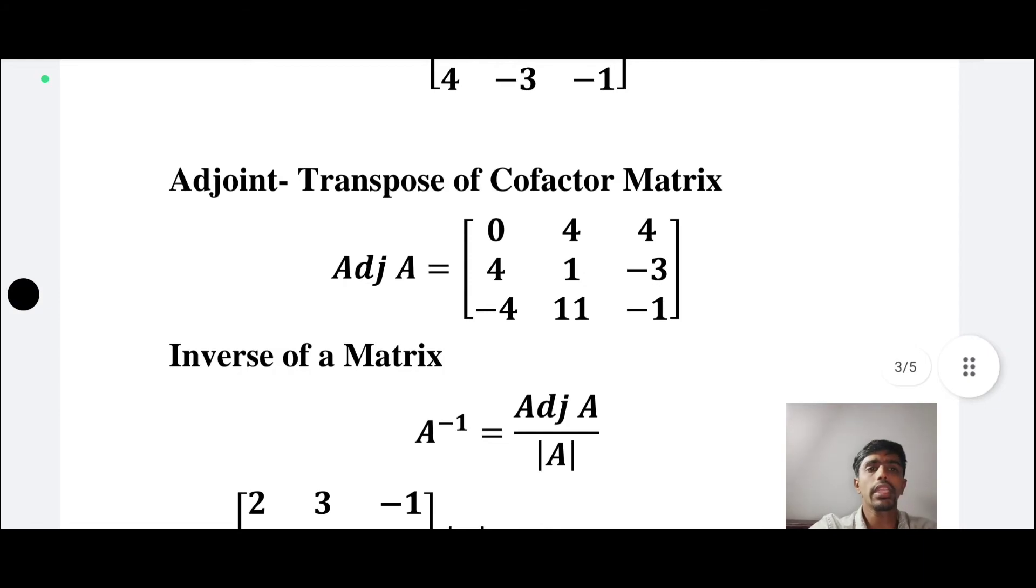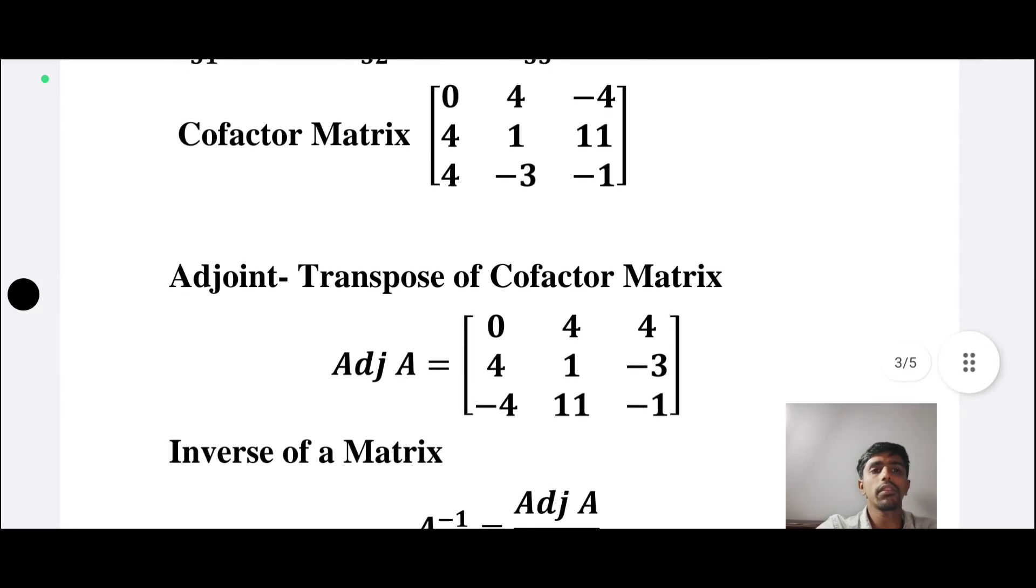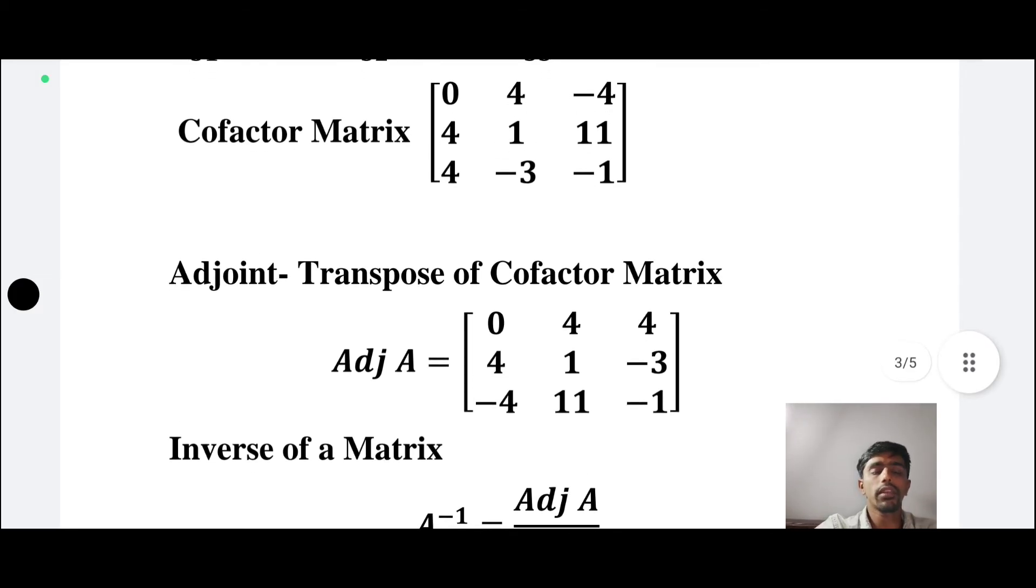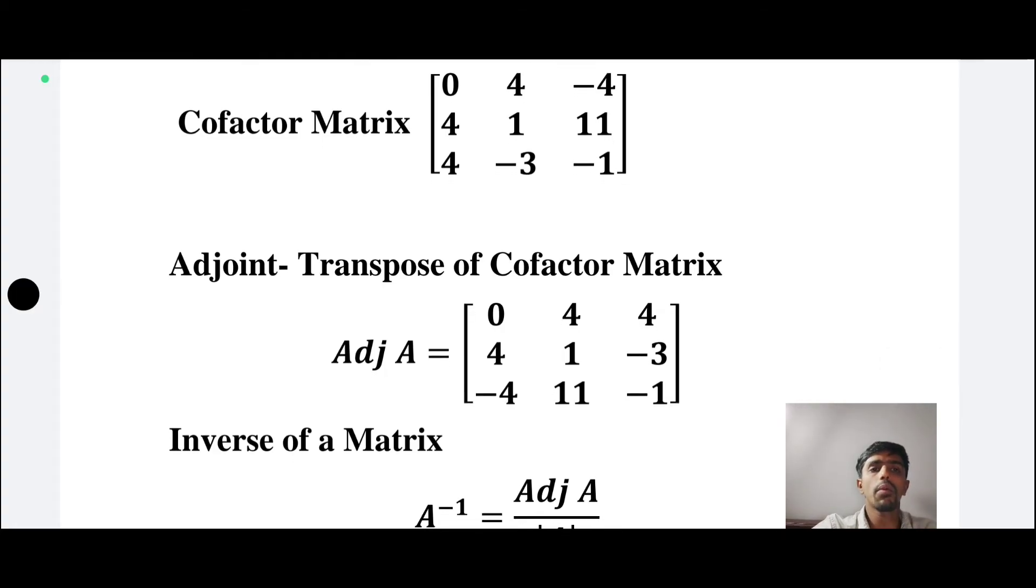The adjoint is the transpose of the cofactor matrix. The transpose of the cofactor matrix gives us the adjoint.